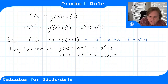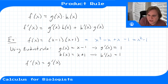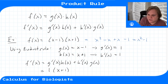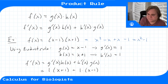Using the product rule, f prime of x is equal to g prime of x times h plus h prime of x times g. Plugging in what we have, we get 1 times x plus 1, plus 1 times x minus 1. So that gives us x plus 1 plus x minus 1, or 2x.